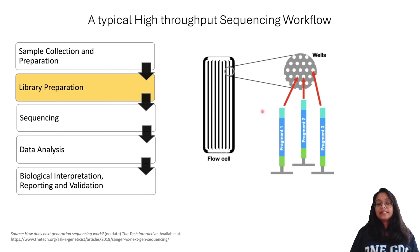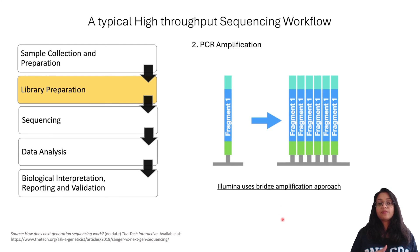Once the DNA from the sample is affixed to the wells, the next step involves amplification of these DNA fragments. Essentially, the idea here is to create a library of identical copies of the DNA. This step is crucial as it is important to generate enough material for sequencing. Illumina uses bridge amplification approach to amplify the DNA fragments.